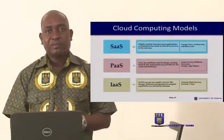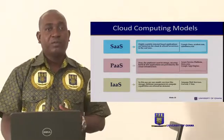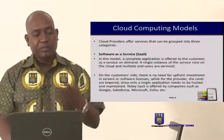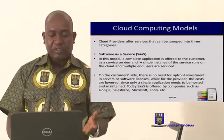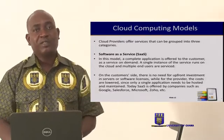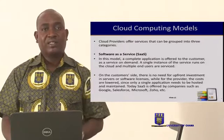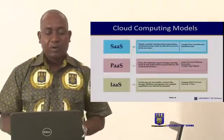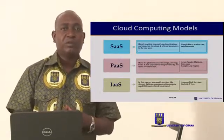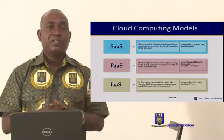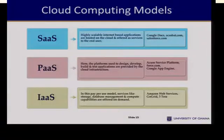Cloud computing models: basically there are three models. We can talk about the service, we can also talk about the platform, and then we can also talk about the software as well as the infrastructure. So we have the software as a service, the platform as a service, and then we also have the infrastructure as a service. For the software as a service, the software is offered to an individual or corporate institution and is being hosted by a third party. The platform as a service is another model that could be utilized under cloud computing.